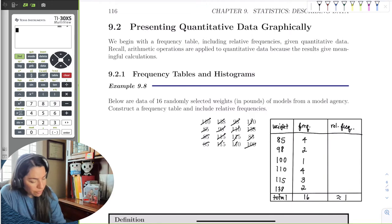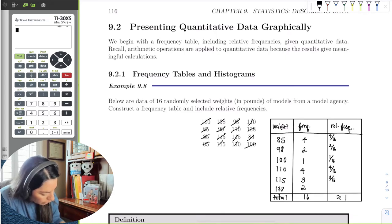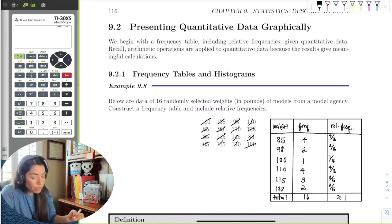The relative frequency would be the proportion. There are 4 models that are 85 pounds out of 16. 2 out of 16 are 98 pounds. 1 out of 16 is 100 pounds. 4 out of 16 are 110 pounds. 3 out of 16 are 115, and 2 out of 16 are 138.